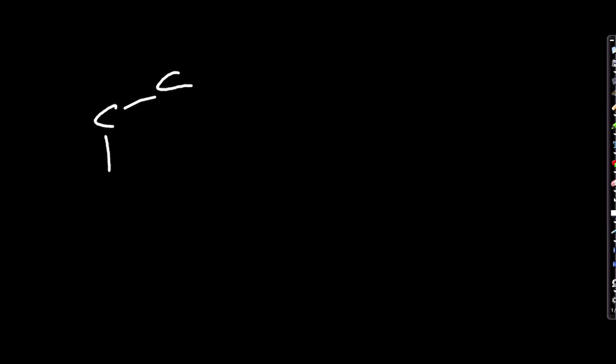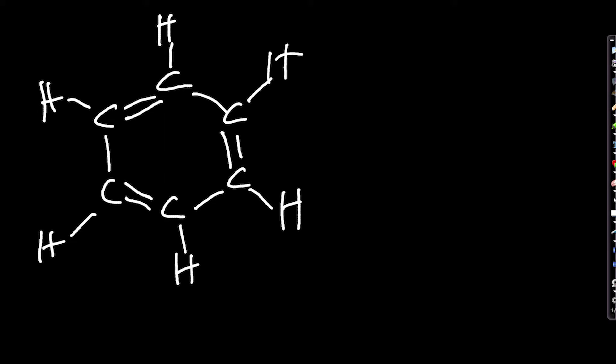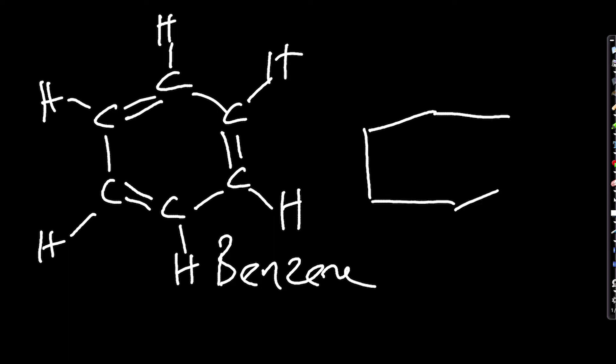Let's draw another one. We have six carbons forming a hexagonal shape. We can also introduce double bonds between carbons — three double bonds and three single bonds. To complete four bonds for each carbon we add one hydrogen per carbon. This is benzene, and we would normally draw it in its simplified ring form.